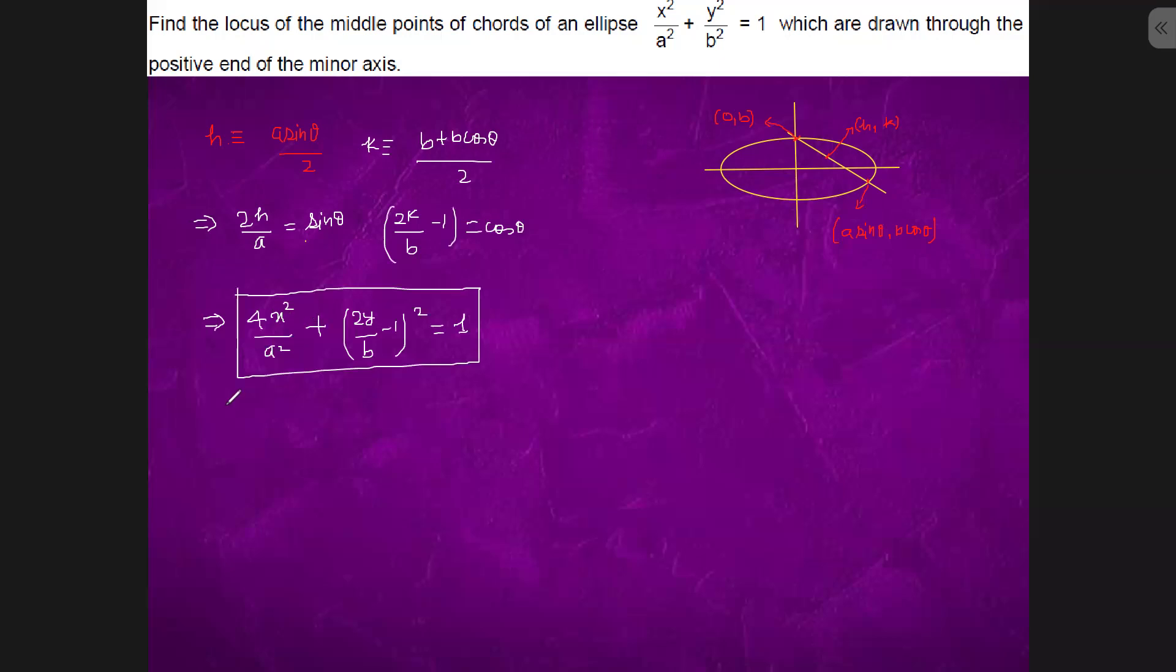If you want to further simplify it, it will become x square by (a by 2) whole square plus (y minus b by 2) whole square upon (b by 2) whole square equals 1.